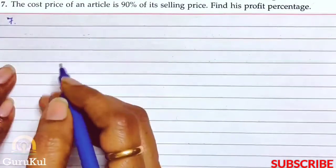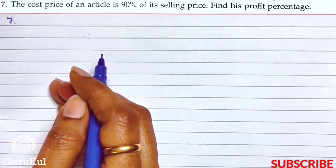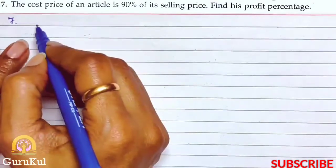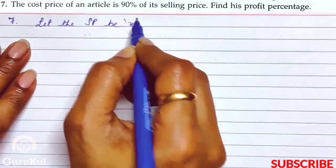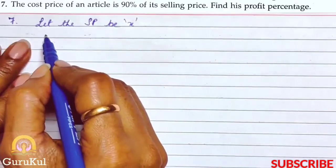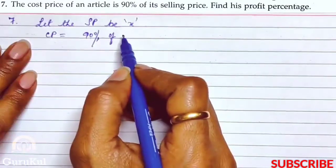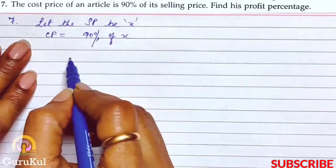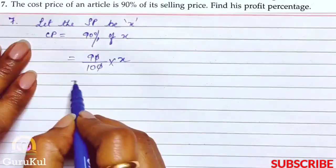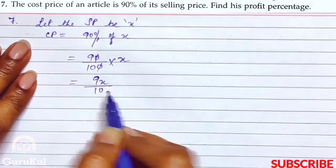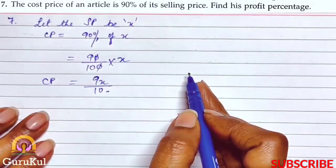Now Question number 7. The cost price of an article is 90 percent of its selling price — find the profit percentage. First, let the selling price be x. Then CP is equal to 90 percent of its selling price, that is 90/100 into x, which simplifies to 9x/10. So this is the CP.